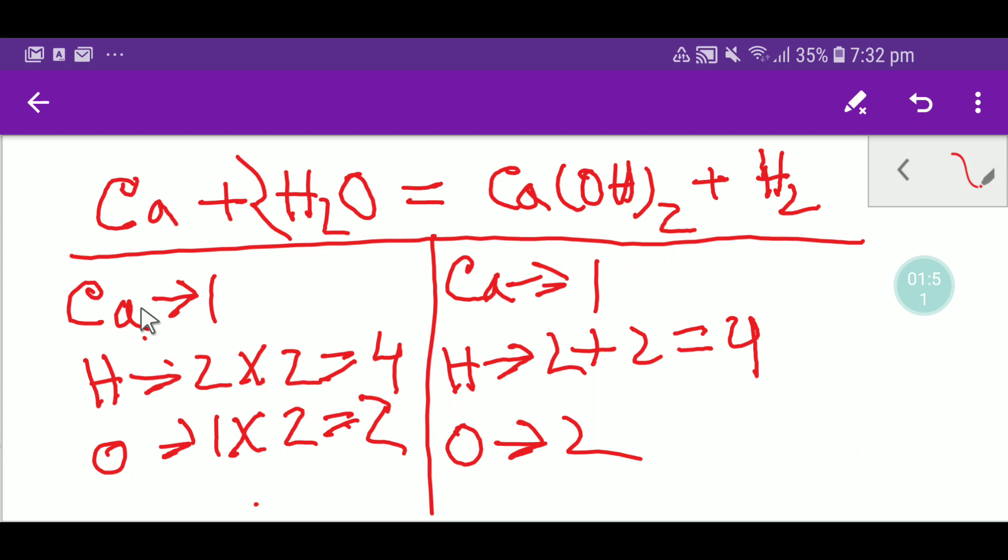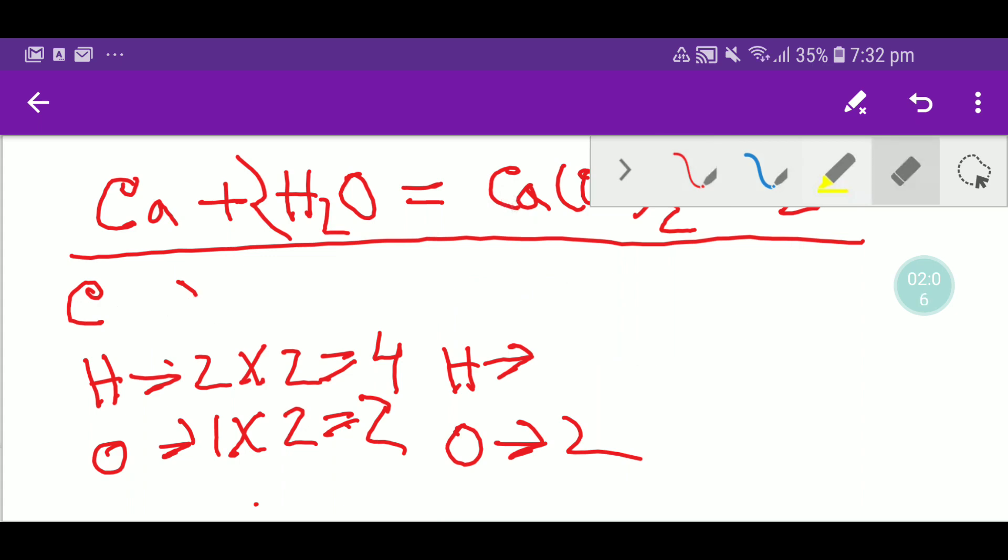Now our calcium is one, one. Hydrogen four, four. And oxygen two, two. So you can say that this equation is balanced. Let me show you the second way to balance this reaction. I think the second will be very helpful in your exam.